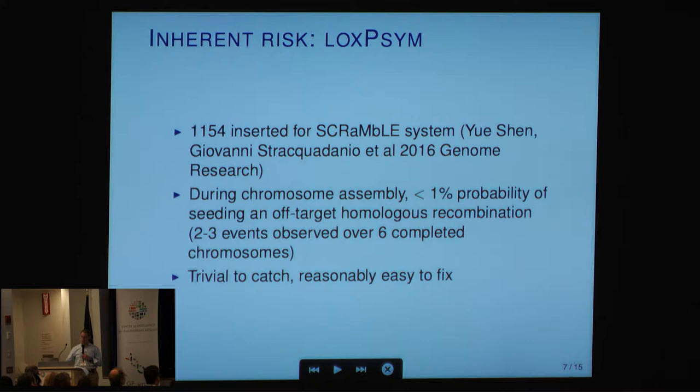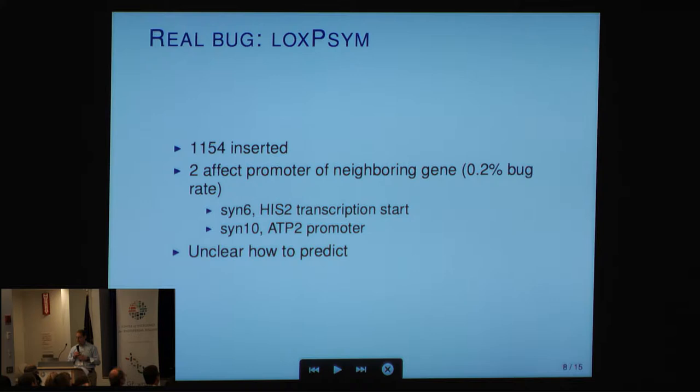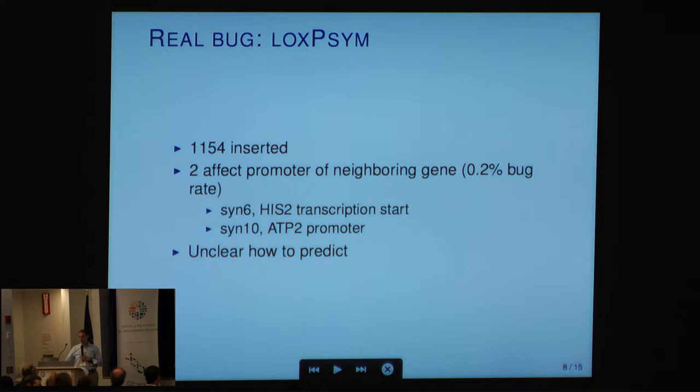A real bug with the LOX-P SIM sites: out of the 1,000, two of them affect the promoter of a neighboring gene. One changes the transcription start; the other actually affects the expression level. It's unclear how to predict them. These are two real bugs out of the 1,000. I don't think there are more, because there is very thorough exploration of RNA-seq data without really any other genome-wide evidence.